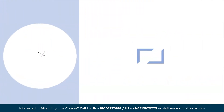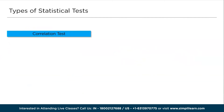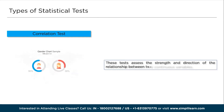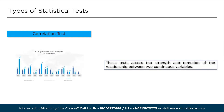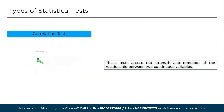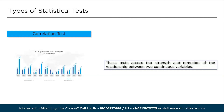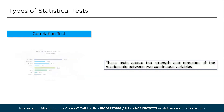Next, the tenth one on the list is correlational tests. Correlational tests are statistical tests used to measure the strength and direction of the relationship between two continuous variables. The most common correlational test is the Pearson's correlation coefficient, which assesses linear relationships. It ranges from -1 to +1, where -1 indicates a perfect negative correlation, +1 indicates a perfect positive correlation, and 0 indicates no correlation.